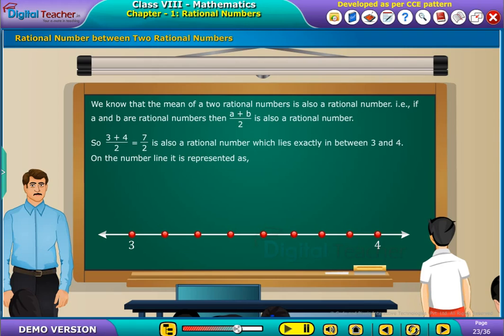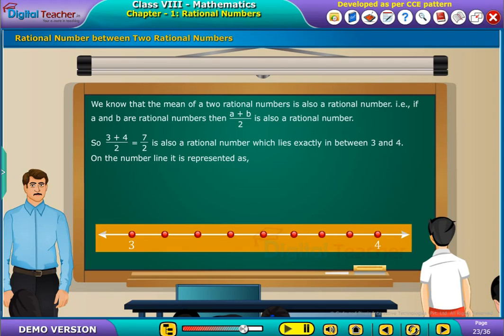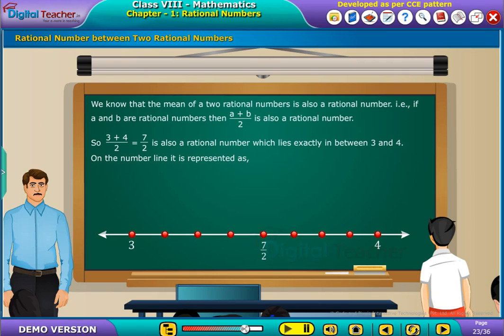So, 3 plus 4 by 2 equals 7 by 2 is also a Rational Number, which lies exactly in between 3 and 4. On the number line, it is represented as shown. It can be written as 3 less than 7 by 2 less than 4.